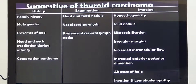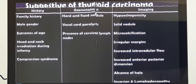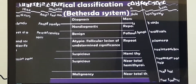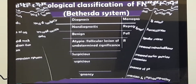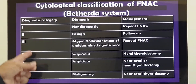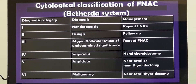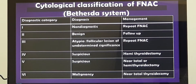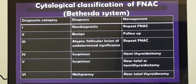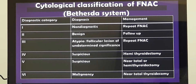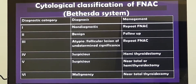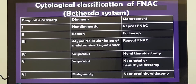When you get a report of the fine needle aspiration, the final impression will come into one of these categories, Type 1 to Type 6 — I am talking about the Bethesda system. Type 1 means it is not diagnostic, meaning we have to repeat the fine needle aspiration. Type 2 means it is benign, not malignant, but we have to be careful — it may turn malignant — so the patient has to be under close follow-up.